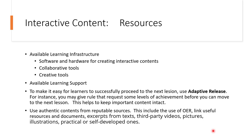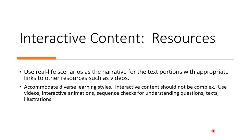You can also use authentic content from reputable sources. Open Educational Resources (OER) are a very good option. You can link to useful resources and documents so you don't have to do all the writing yourself. However, don't overload students with too many links — you must assess what you're linking to and ensure it doesn't add excessive reading workload. You can get excerpts from texts, use third-party videos, pictures, illustrations, and practicals, or develop your own self-developed videos.